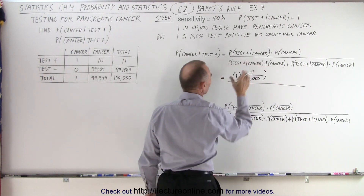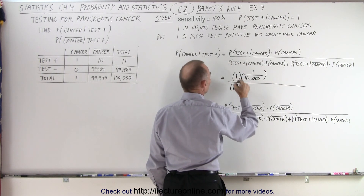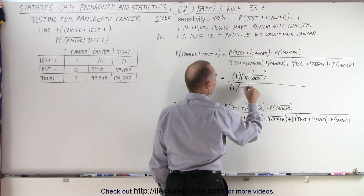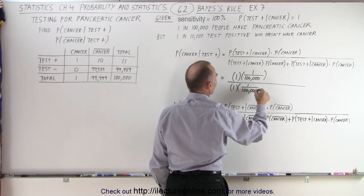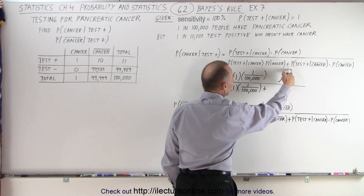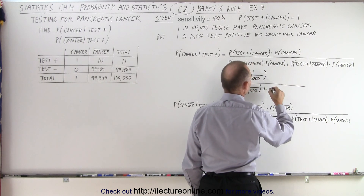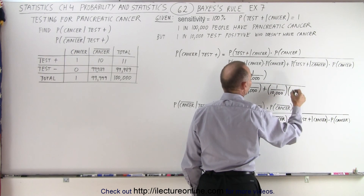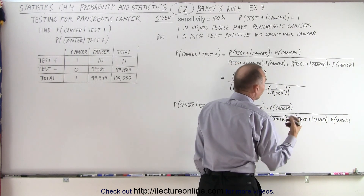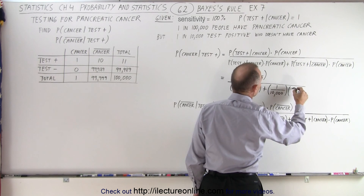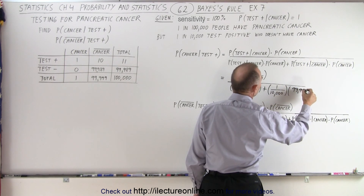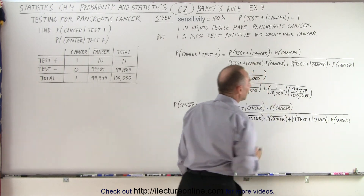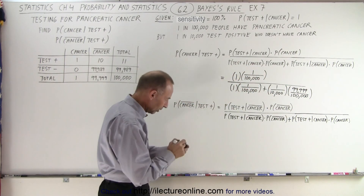We divide that by the same quantity — the probability of testing positive if you have cancer, which is 1, times the probability of having cancer, which is 1 in 100,000. Plus the probability that you test positive if you don't have cancer, which is 1 in 10,000, times the probability that you don't have cancer, which is essentially 99,999 over 100,000 — so essentially equal to 1.